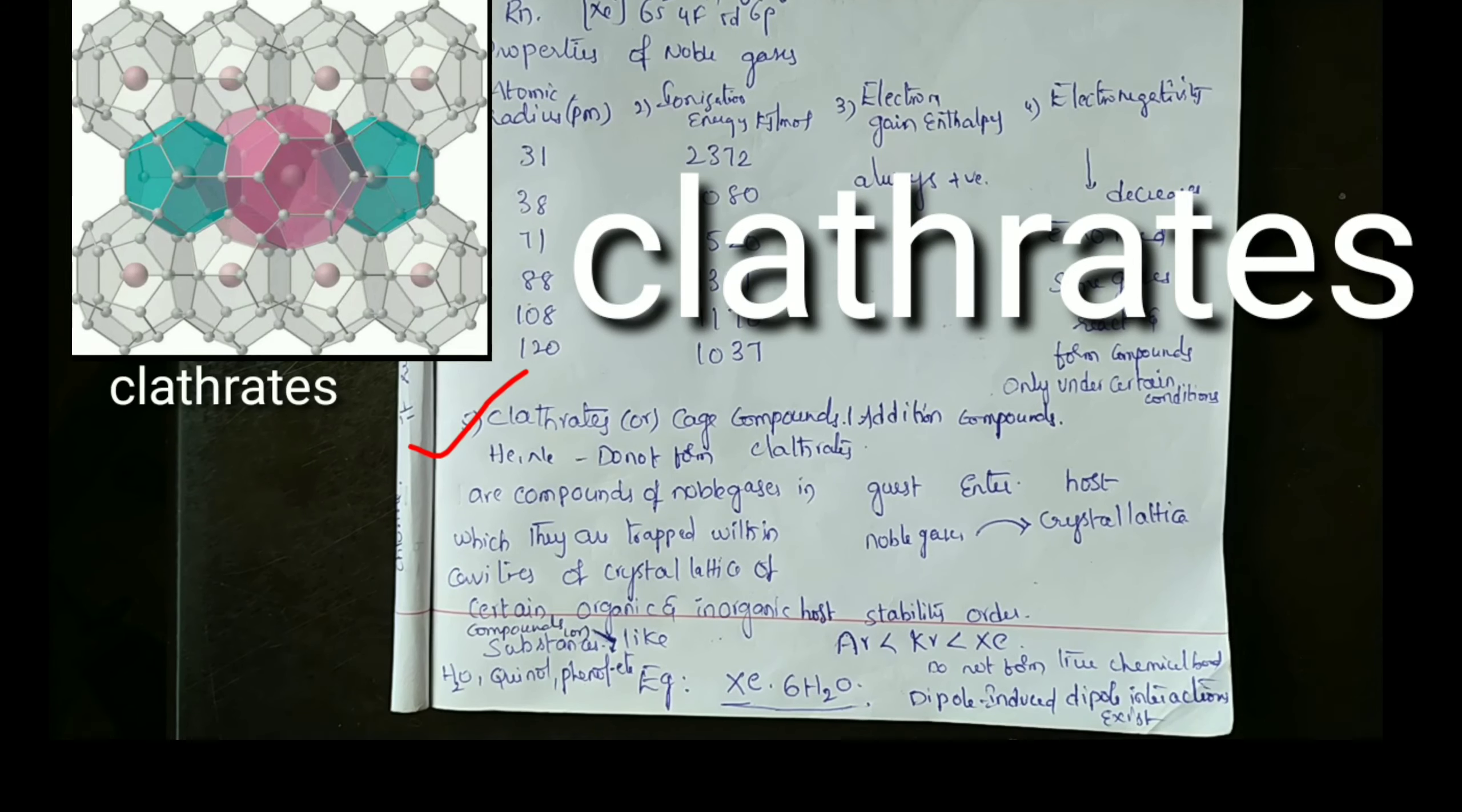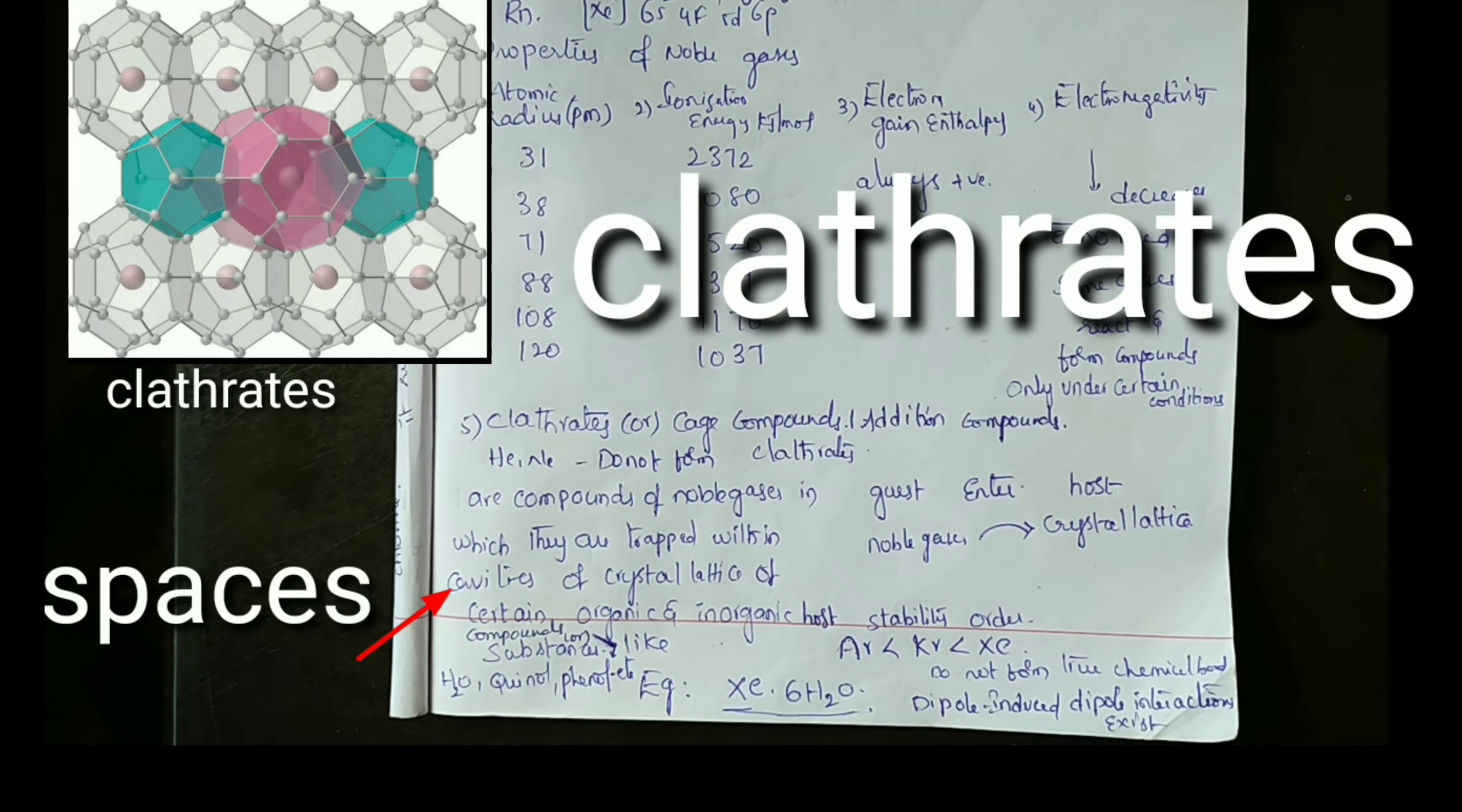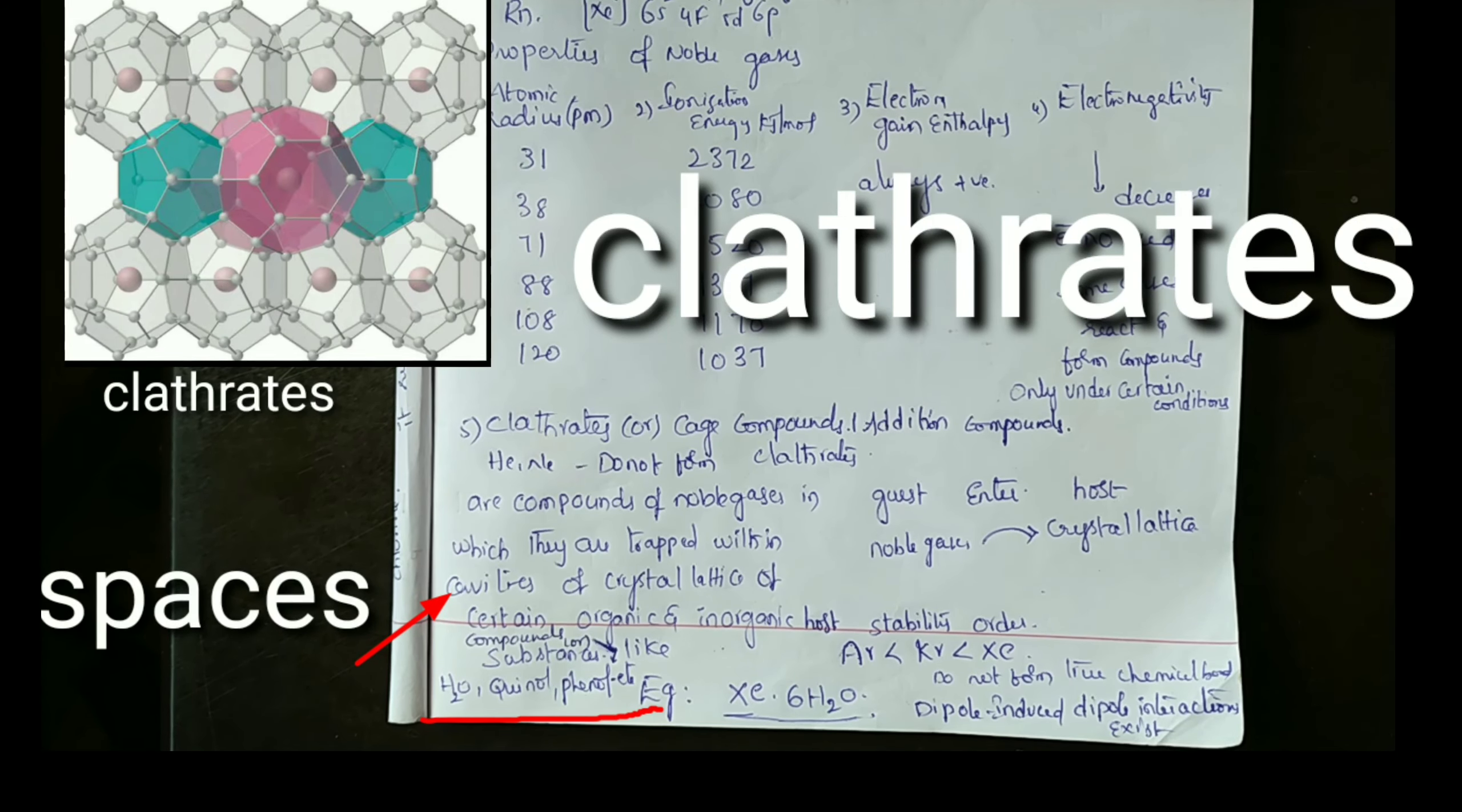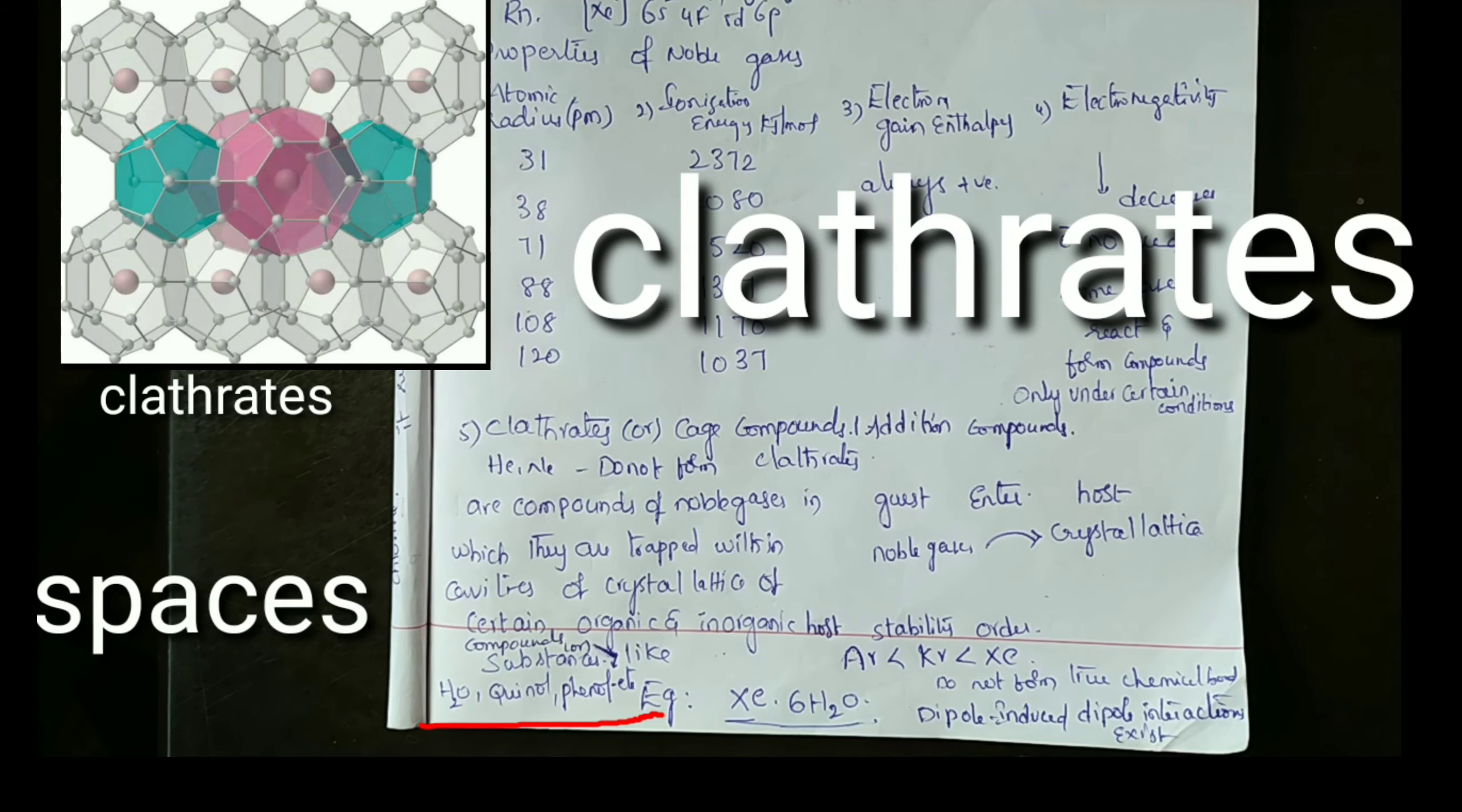Clathrates are compounds of noble gases in which they are trapped within the cavities of crystal lattices of certain organic and inorganic host compounds like water, quinol, phenol, etc.